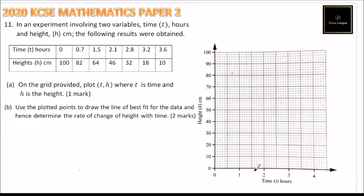Then when it is 1.5, this is 1.5, it is 64. So here it is 1.5, 64 is that mark. When it is 2.1, this is 2.1, the height was 46. So 46, we have 2.1. This is where we have 46.